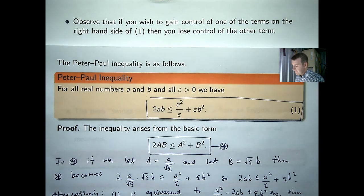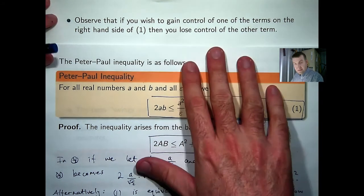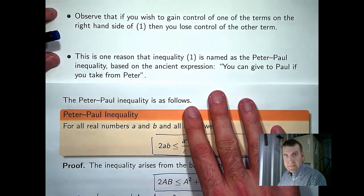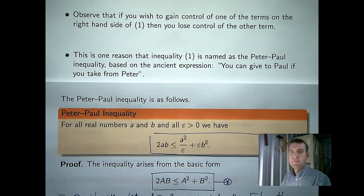So, if you want to control one term, you give up control of the other term. And this leads nicely into the reason behind the name Peter-Paul.